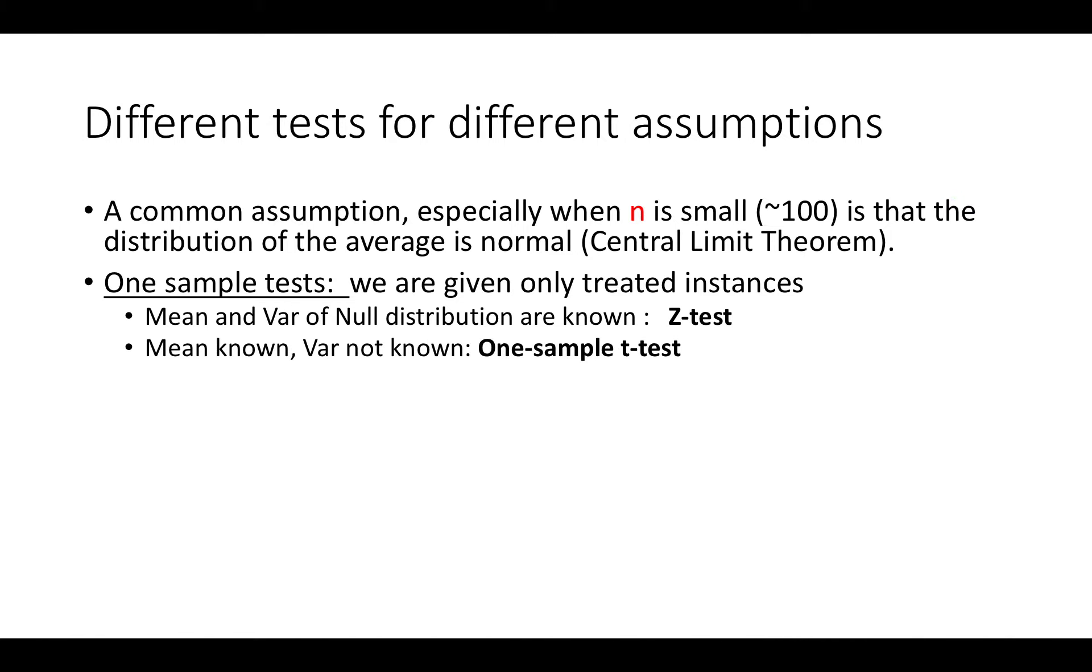When the mean is known and the variance is not known then we get a one sample t-test. So one sample t-test works under the assumption that we know what the mean is, let's say we believe that the mean is zero, but the variance of the distribution is not known. So we somehow have to estimate the variance as well as estimating the mean.